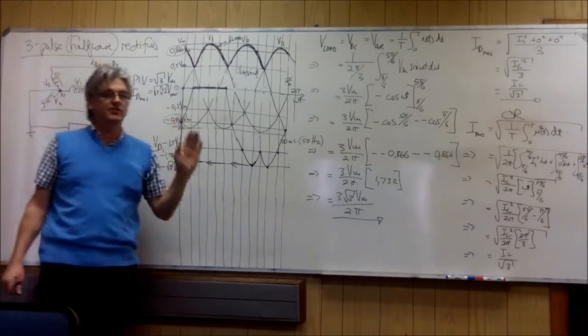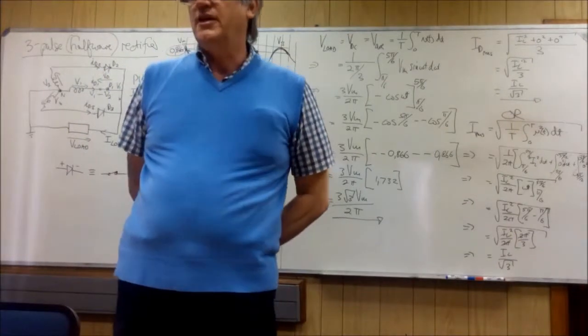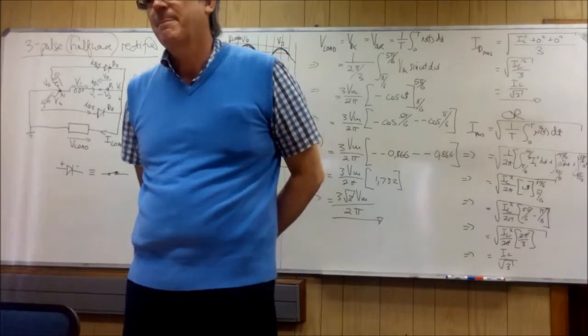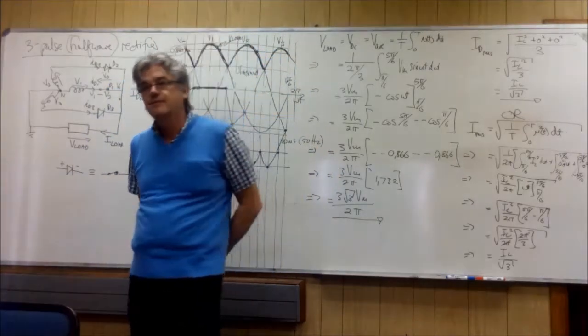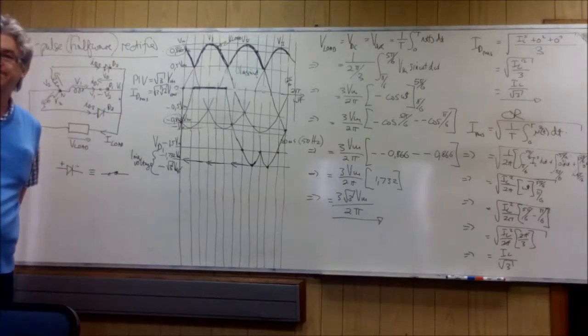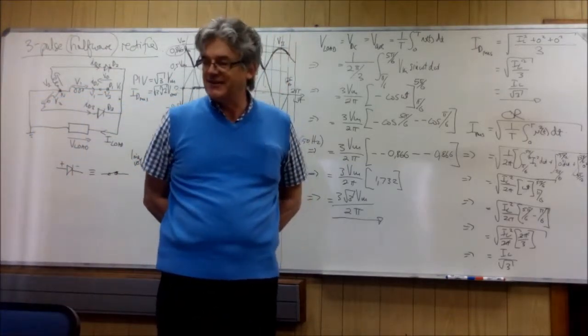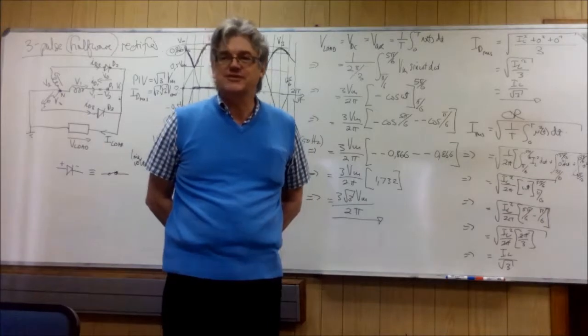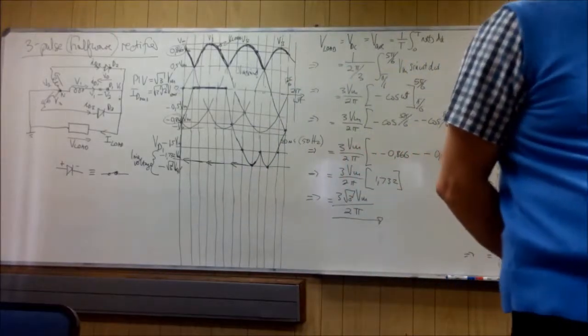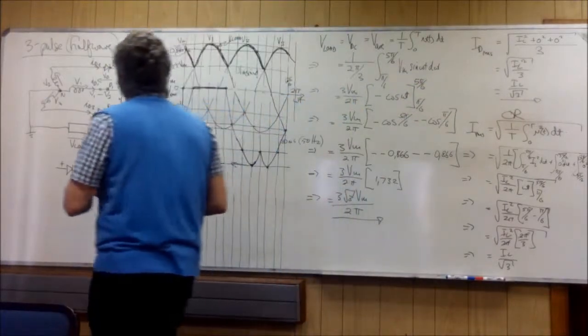So if the input voltage is, here you emigrate to America or Canada, the input voltage is 60 Hertz, what will your ripple frequency be? 180. Now you didn't understand, I think that 3-pulse could be such a charm. That's that.